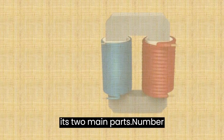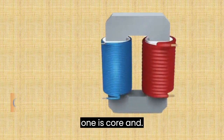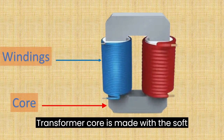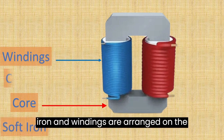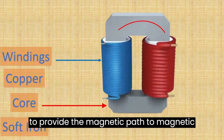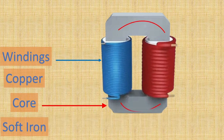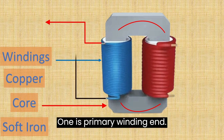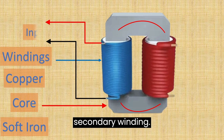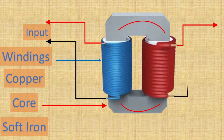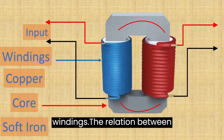A Transformer has two main parts: Number 1 is the Core, and Number 2 is the Windings. The Transformer core is made of soft iron, and the windings are arranged on the core. The purpose of the core is to provide a magnetic path for the magnetic flux created by the Transformer windings. A Transformer has two windings: one is the primary winding and the second is the secondary winding. The Transformer input is connected to the primary winding, and the output is connected to the secondary winding.